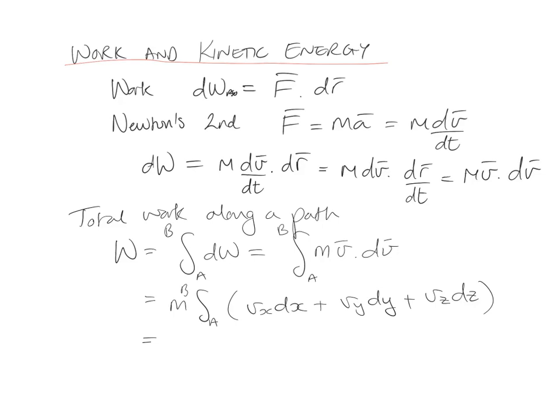If we do that integral, we end up with m over 2 times vx squared plus vy squared plus vz squared between a and b. You notice that's just the total magnitude of the velocity squared. So this is just m v squared over 2 between a and b,